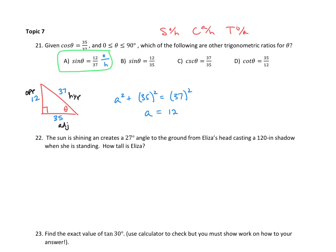It says which of the following, so there might be more than one. Is sine of theta equal to 12 over 35? No, because sine of theta is 12 over 37. Now we have some reciprocal trig functions — cosecant and cotangent. Cosecant is the reciprocal of sine, so if sine is opposite over hypotenuse, cosecant is hypotenuse over opposite. Is the hypotenuse 37? Yes. Is the opposite side 35? No, the opposite is 12 — so that's not correct.